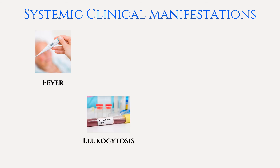Leukocytosis refers to an increase in white blood cell count. A left shift can occur as neutrophils rapidly increase in number, leading to a large amount of immature or band neutrophils.